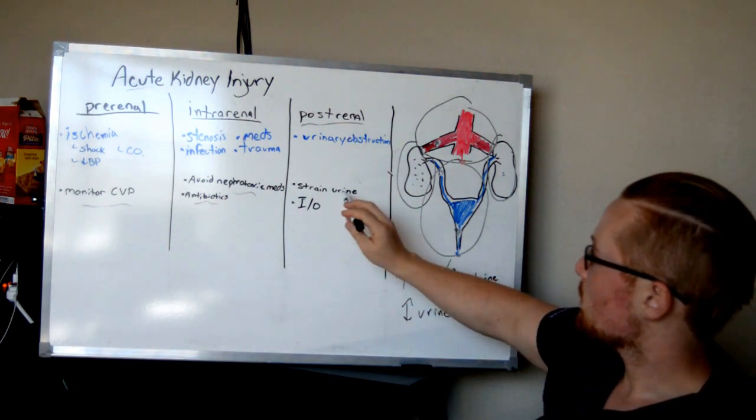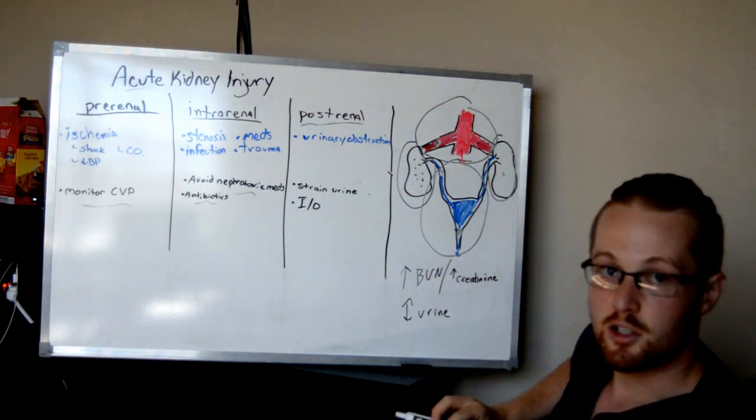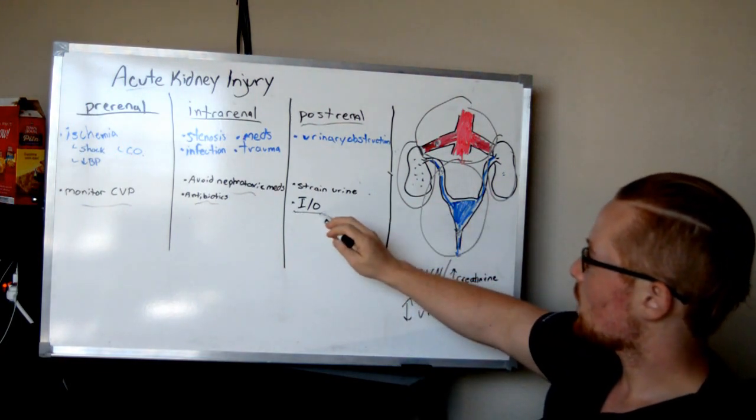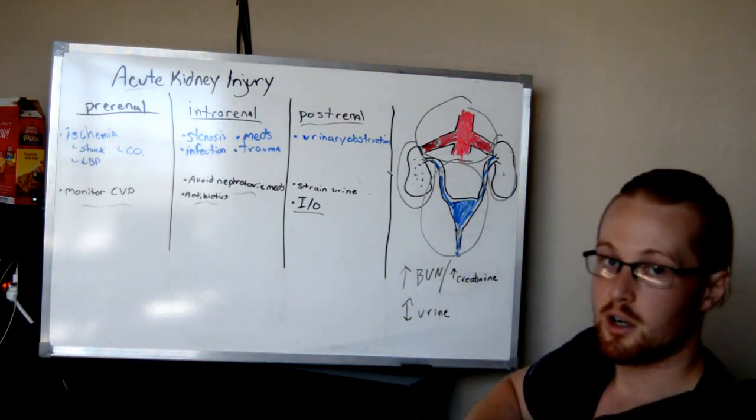If it's postrenal, you want to maybe strain the urine, see if you can get any urinary stones to come out, kidney stones. You want to monitor their input and output so you can make sure how much urine they're producing.